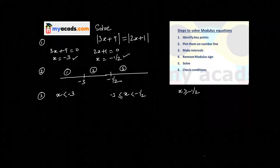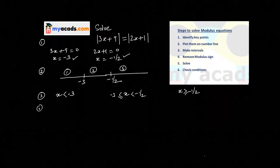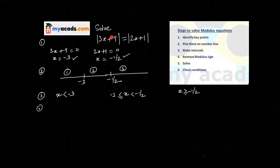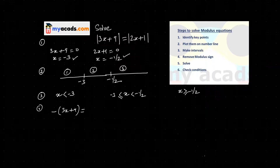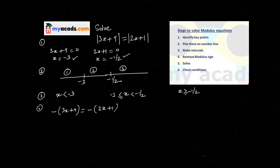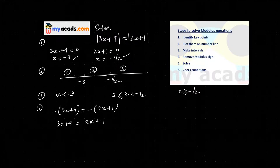My fourth step is to remove the modulus sign. If x is less than minus 3, then 3x plus 9 is a negative term. To remove the modulus of a negative term, I keep a minus sign outside. Similarly, 2x plus 1 is also negative, so I keep a minus sign there too. This gives us 3x plus 9 equals 2x plus 1. My fifth step is to solve this: x equals minus 8.